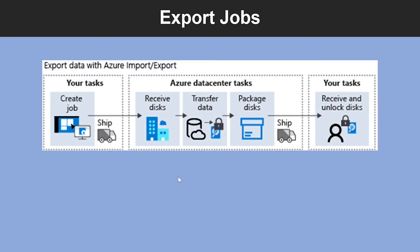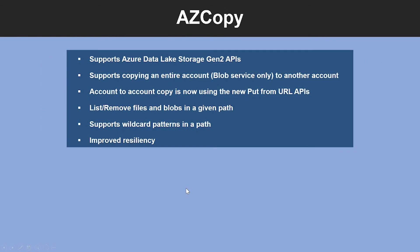Now let's look into the export job. First, identify the data in Azure Storage that you intend to export. Identify the number of disks you will need to accommodate all the data you want to transfer. Use the Azure portal to create the export job and ship the required number of disks to the Azure region hosting the storage account. Once the disk arrives, the Azure Data Center staff will carry out the data copy. The disk will be encrypted using BitLocker, and the BitLocker key will be available in the Azure portal, allowing you to decrypt the content and copy it to your on-premises storage.